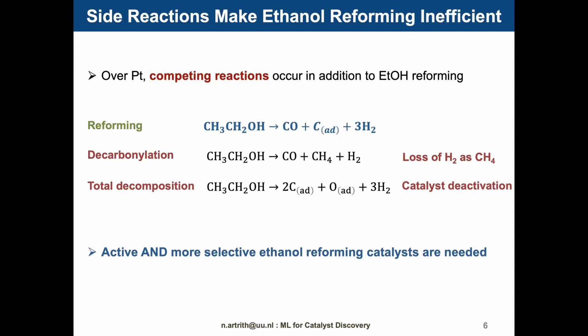The main challenge is that side reactions make ethanol reforming inefficient. Unfortunately, ethanol reforming competes with other reactions. Over platinum catalysts, ethanol can also undergo decarbonylation reactions or total decomposition. These reactions are not needed, since they result in loss of hydrogen and catalyst deactivation. So better ethanol reforming catalysts are therefore needed.